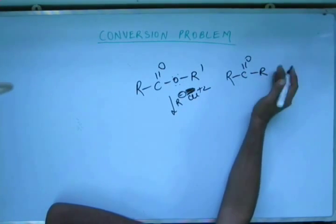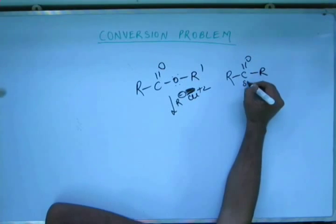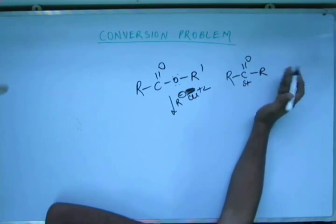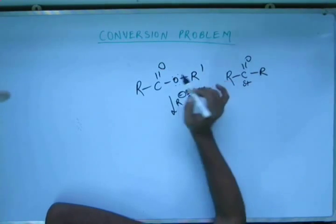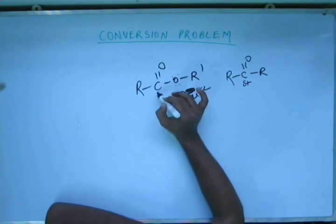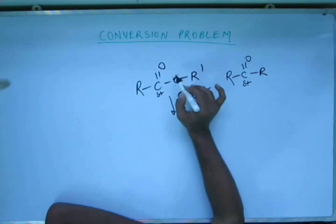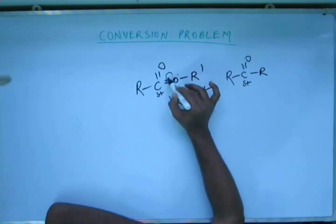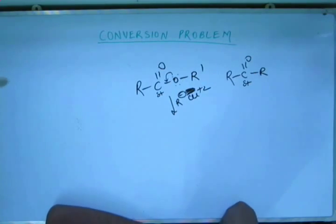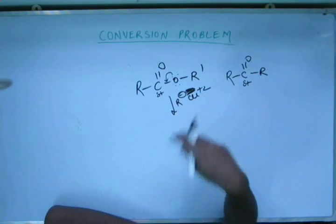Now ester is much less reactive than carbonyl compound because in carbonyl compound you have a ketone. This R group is giving electron through plus I effect through inductive effect. Here this oxygen will be giving electron to this electron deficient carbon through plus M effect. Now plus M effect is much stronger than plus I effect. So this ester is very less reactive. There will be no reaction in this case.